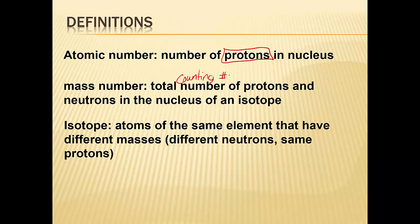Specifically, an isotope — isotopes are atoms of the same element, hence the same element. Well, if it's the same element, that means it has to have the same number of protons. But it has a different mass. Since mass comes from protons and neutrons, it therefore has to have a different number of neutrons, but the same protons. Because if you change the protons, you change the element. Never pick protons as an answer for what's different. So an isotope has different masses but the same protons.